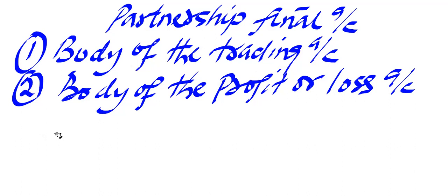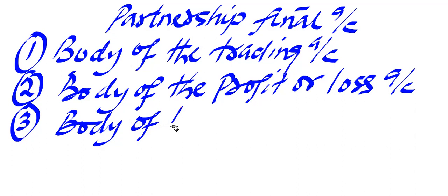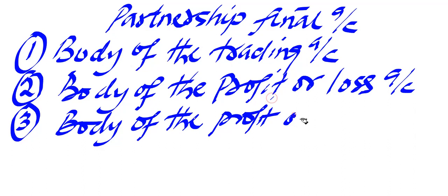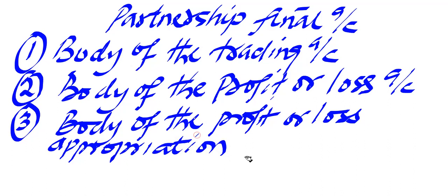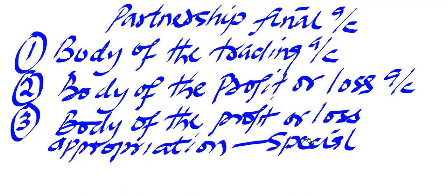The third one is the body of the profit or loss appropriation account. Appropriation deals with special matters — it is where you record attributions of each partner individually. You're not talking about the partnership as a whole here; you're talking about the partners specifically. General refers to the general business, but specific refers to the partners individually. In this third stage, you record information that is directly attributed to the partners.